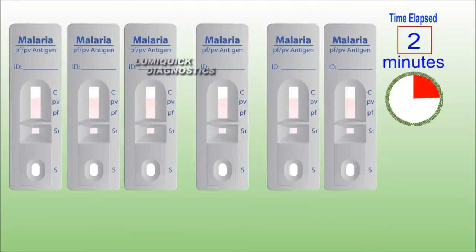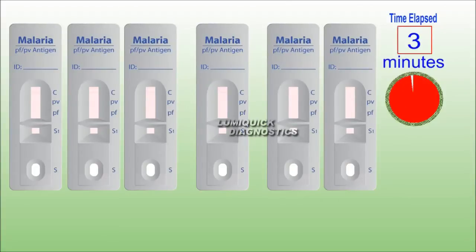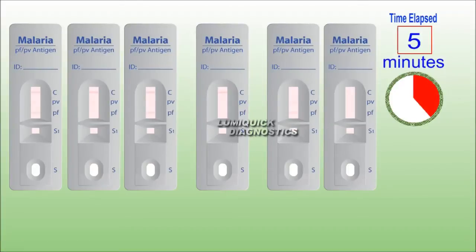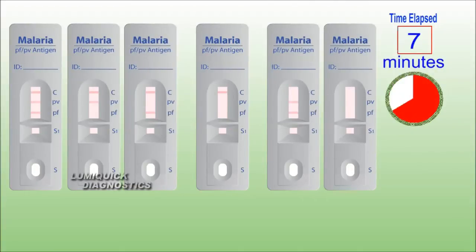Malaria is a serious parasitic disease characterized by fever, chills, and anemia, and is caused by a parasite transmitted from one human to another by the bite of infected Anopheles mosquitoes. There are four kinds of malaria that can infect humans: Plasmodium falciparum, Plasmodium vivax, Plasmodium malariae, and Plasmodium ovale.